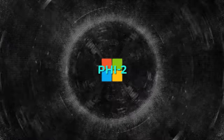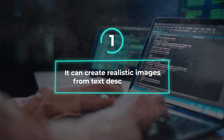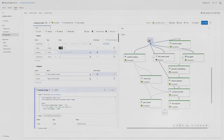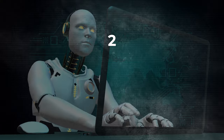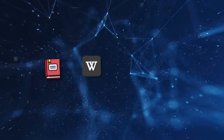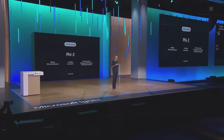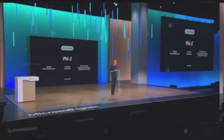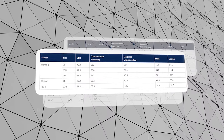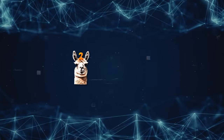Phi-2 aims to be even better than the earlier models in two key ways. First, it can create realistic images from text descriptions, a unique feature among small language models. Second, it improves itself by learning from different sources like books, Wikipedia, code, and scientific papers. Despite having only half the parameters compared to models like LLaMA 2 and Mistral, Phi-2 still performs better in benchmarks.